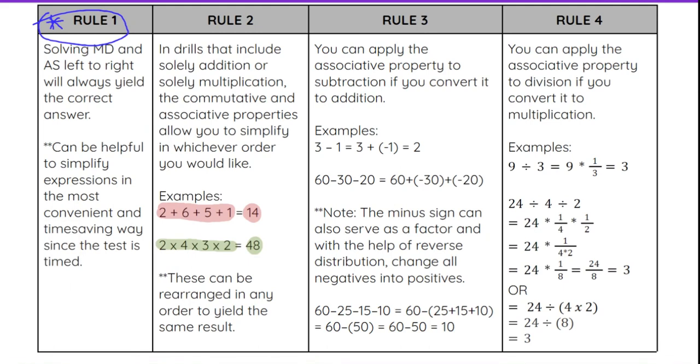Rule 3, you can apply the associative property to subtraction if you first convert it to addition. For example, 3 - 1, if we convert 3 - 1 into addition, that would be + negative 1, and that equals 2. Because I changed it into addition, I could technically think of this as -1 + 3 and get the same answer either way.